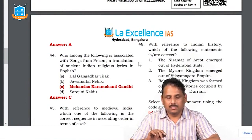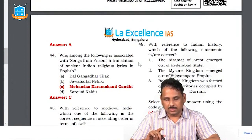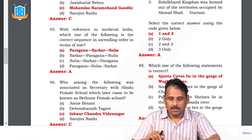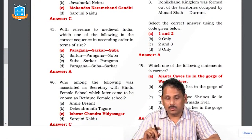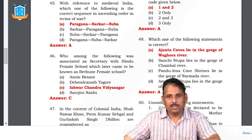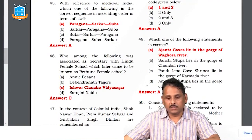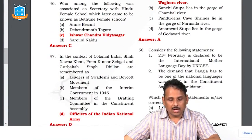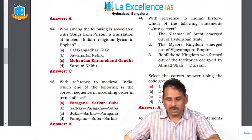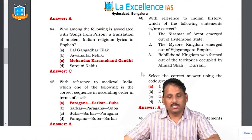Question 42: who is associated with 'Songs from Prison'? It is Mohandas Karamchand Gandhi, who translated ancient Indian religious lyrics as 'Songs from Prison.' Question 43: medieval India ascending order in terms of size — Paragana is smallest, then Sarkar, then Subha. Subha is the highest. The answer is A. Question 44: the secretary of Hindu Female School, later known as Bethune Female School, was Ishwar Chandra Vidyasagar — the educationist who worked for widow remarriage in colonial India. Question 45: Shah Nawaz Khan, Prem Kumar Sahgal, and Gurbaksh Singh Dhillon are associated with the Indian National Army and the famous INA trials.